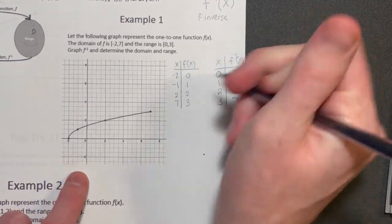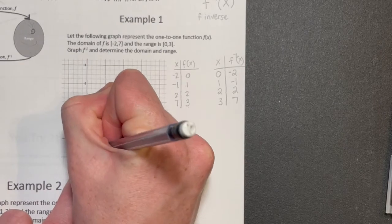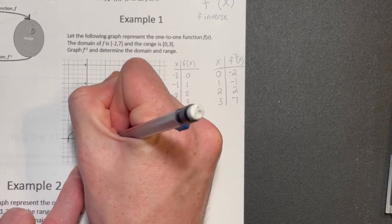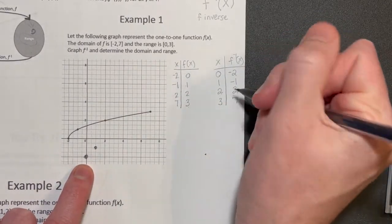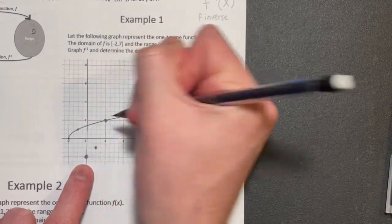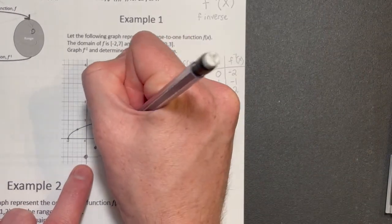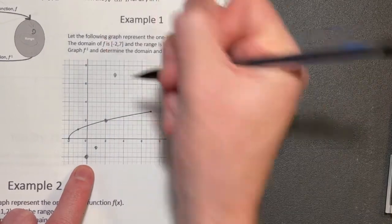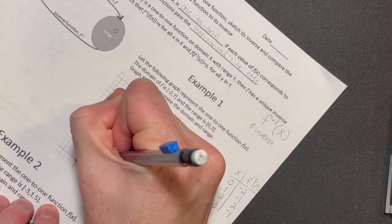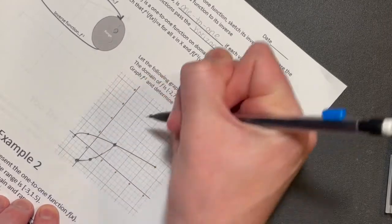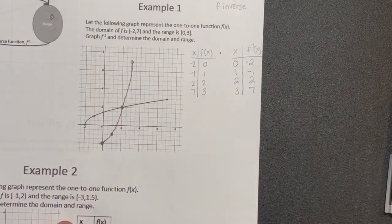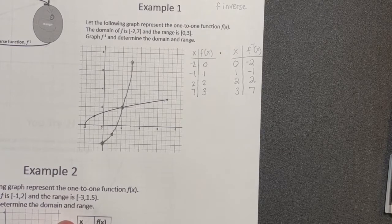Now we're going to graph what that looks like. The new point (0, negative 2) is plotted, then (1, negative 1), then (2, 2) — which is the same point, so we draw on top of it — and then (3, 7) goes all the way up. Connecting the dots, we draw the inverse graph, which hopefully looks like a mirror image of the original function.